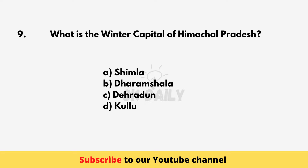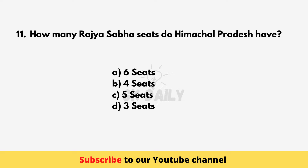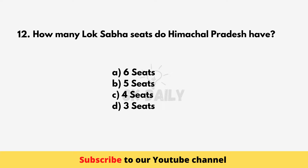How many divisions are in Himachal Pradesh? 3 divisions. How many Rajya Sabha seats does Himachal Pradesh have? 3 seats. How many Lok Sabha seats does Himachal Pradesh have? 4 seats.